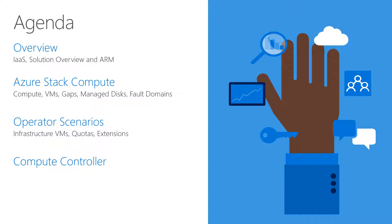Our today's agenda: we start with a quick overview about Infrastructure as a Service in general, the Solution Overview and ARM — our Azure Resource Manager — followed by Azure Stack Compute, more details about compute, virtual machines, gaps between Azure and Azure Stack, managed disks and fault domains. The next topic is Operator Scenarios covering Infrastructure VMs, Quotas and Extensions, and the last topic is Compute Controller.